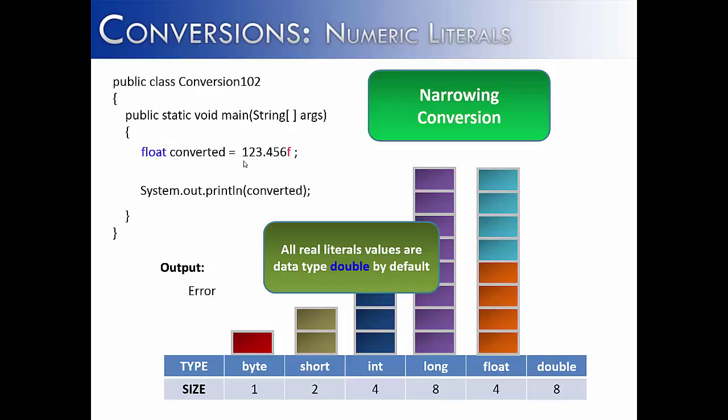And now there is no conversion happening because the number on the right is a float value, and the value converted can hold a float value because that's what data type it is. And so when we run this, we would get 123.456 without any problems.